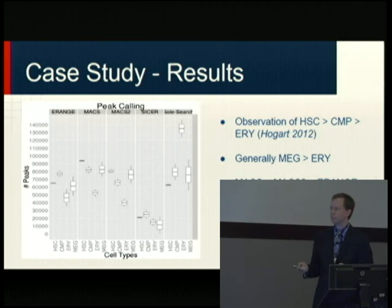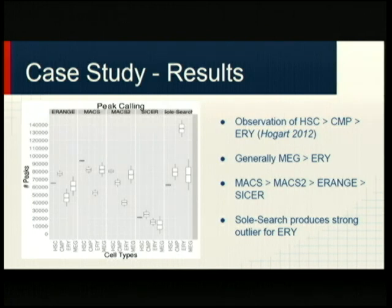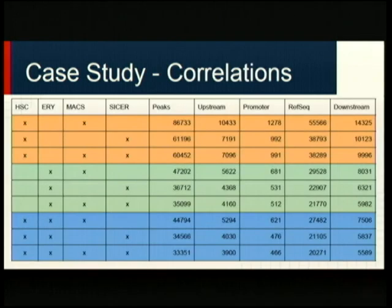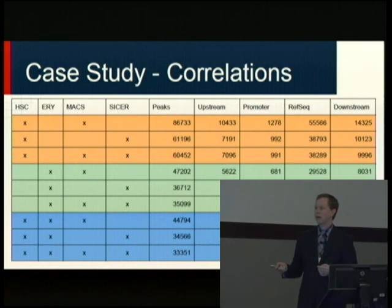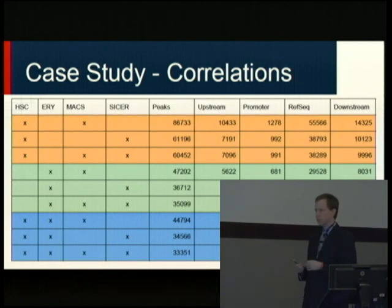That pattern held for MACS and MACS2 and to a lesser degree INCISORS, but looking at other tools, SoulSearch was a direct outlier. This approach lets you hone in on general patterns. When we correlated the data for two cell types — HSCs and red blood cells — with two tools, we looked at combinations: sites occurring only in HSCs, only in EOys, or in both. With about 86,000 MACS peaks and 61,000 INCISORS peaks, pretty much all INCISORS peaks were contained within MACS.